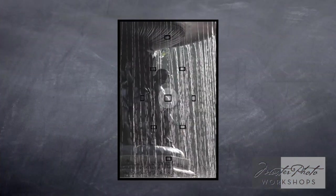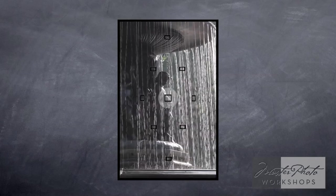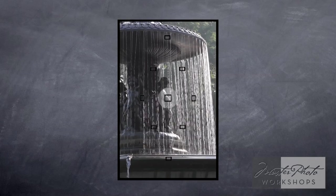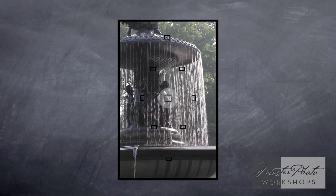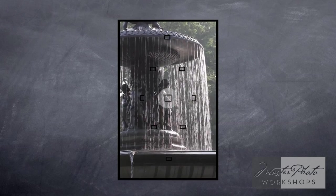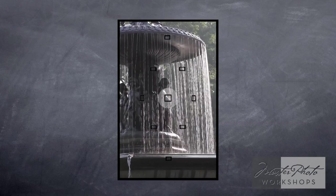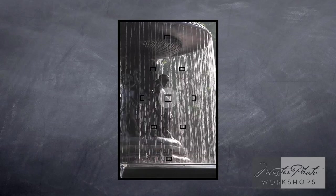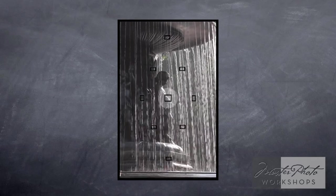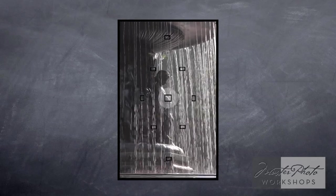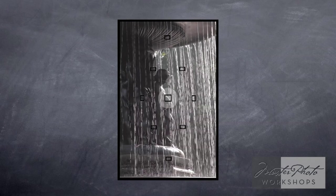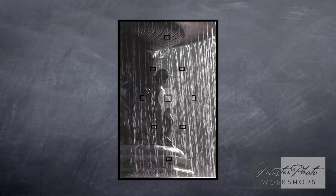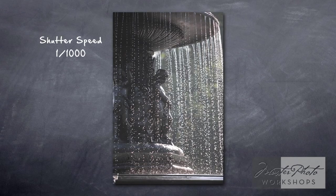We've got a great shot here that demonstrates how different shutter speeds affect our images. We've got a fountain shot with water falling down — the water is moving fairly quickly. We're going to shoot at a couple different shutter speeds to illustrate exactly how that makes our images look. The first shot is at a thousandth of a second, pretty quick, and you can see how it freezes those droplets of water pretty solidly.